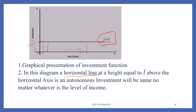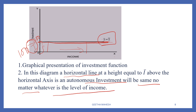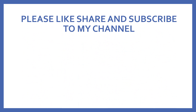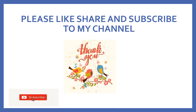The investment line is drawn as a horizontal line at the height of I-bar, for example 100 crore. This line remains constant throughout the analysis — autonomous investment will be the same no matter what the level of income is.